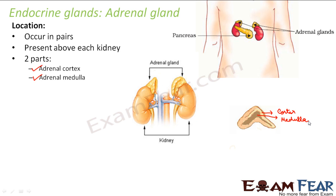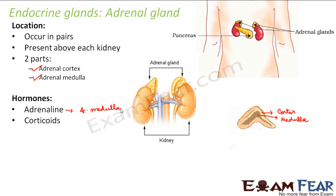Each of these two parts secretes different hormones. The first is adrenaline, secreted by the adrenal medulla — the internal part. The other hormone is corticoids; the word 'corti' is derived from cortex, so it is secreted by the adrenal cortex. These are the two hormones secreted by the adrenal glands.